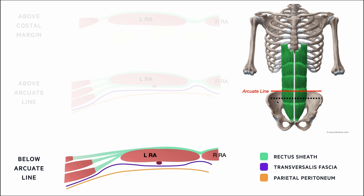Below the arcuate line, the external oblique is less prominent inferiorly — mostly internal oblique and transversus abdominis. Notice that below the arcuate line, none of that aponeurotic tissue goes behind the rectus abdominis. Instead, it all goes anterior to the rectus abdominis, forming just the rectus sheath — no posterior part, no separate anterior part. As you go to the midline, it fuses with that from the right side at the linea alba. Below the arcuate line, transversalis fascia and parietal peritoneum are still present, extending all the way around.